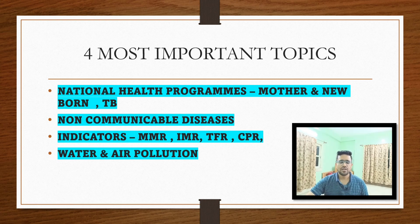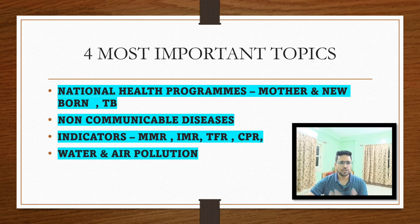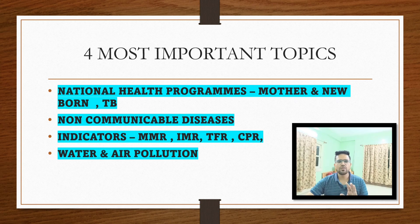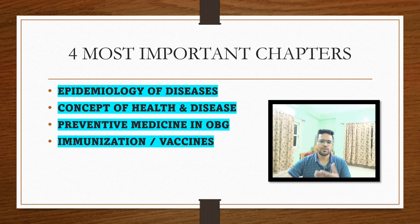Read indicators like maternal mortality rate in 2022–2023, infant mortality rate, and total fertility rate — learn these figures. Fourth, read about water and air pollution and how to manage these pollutions. These four topics are very important — I'm telling you, a minimum of seven to eight questions are going to come from these four topics this year also.